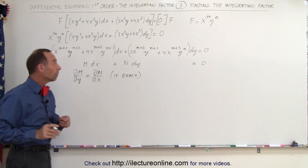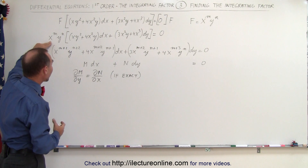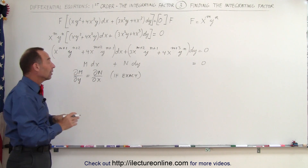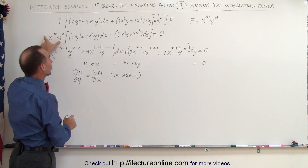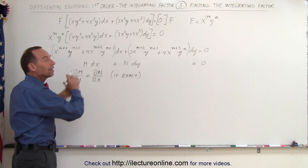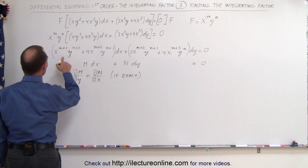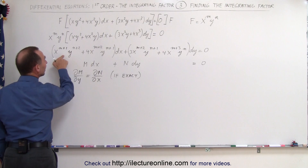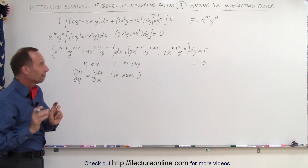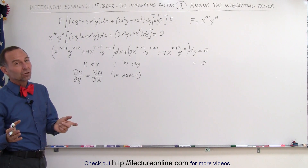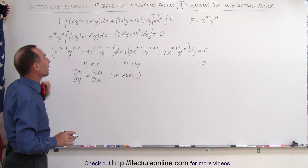By multiplying by this arbitrary integrating factor, we assume we make the equation exact, so we can now find the correct exponents m and n to make this an exact differential equation. That means the partial of M with respect to y should equal the partial of N with respect to x for the appropriate values of m and n. We need to find those correct values.